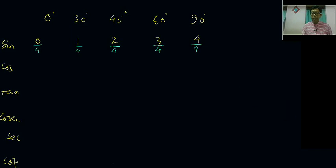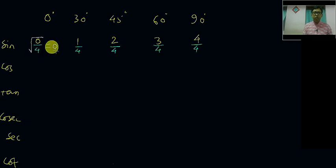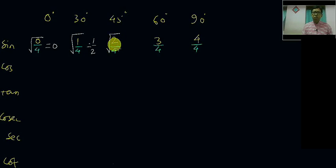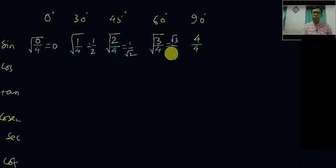You have to take the square root of each of the ratios. Square root of 0/4: you know 0 by 4 is 0, so square root of 0 is again 0. Next, square root of 1/4 is 1/2. Square root of 2/4, which is 1/2, gives 1 upon root 2. Square root of 3/4 gives root 3 upon 2. And finally, square root of 4/4 is equal to 1.